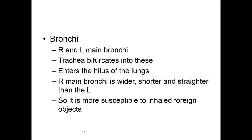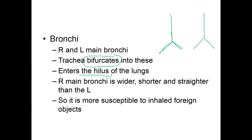The bronchi branch off the trachea — it bifurcates into the right and left bronchi. This enters into the hilus of the lungs, which is where all the incoming and outgoing tubes, blood vessels, arteries, veins, nerves, and bronchi come from.